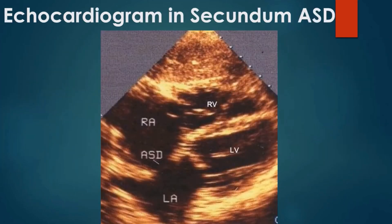Echocardiographic image from the subcostal four-chamber view shows an ostium secundum atrial septal defect. The subcostal view is ideal for imaging atrial septal defect to exclude false echo dropouts, which may be seen in the apical four-chamber view. This is because the imaging ultrasound beam is perpendicular to the septum in the subcostal view, while it is parallel to the atrial septum in the apical four-chamber view. This ASD has good rims above and below and could be suitable for device closure, to be finally decided after a transesophageal echocardiogram to assess all rims.